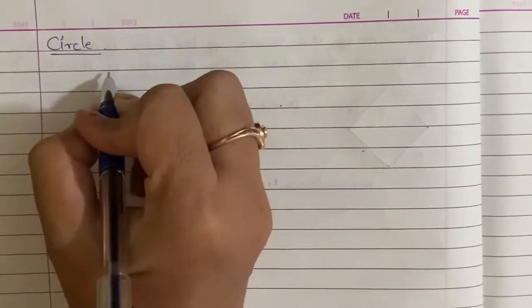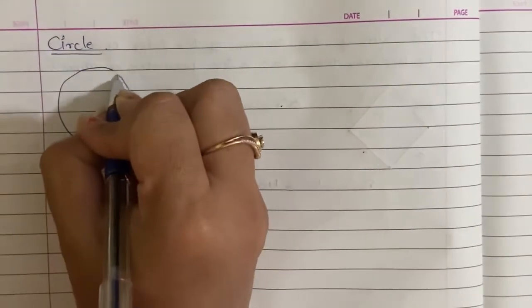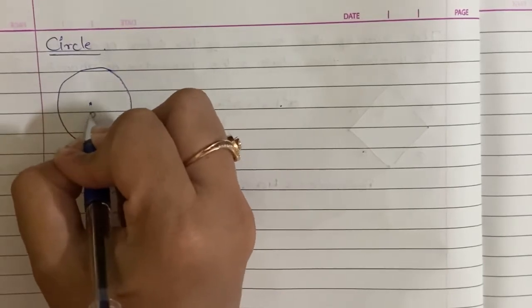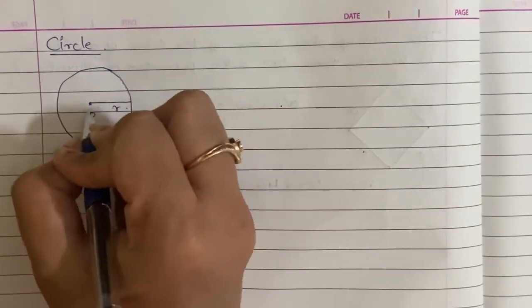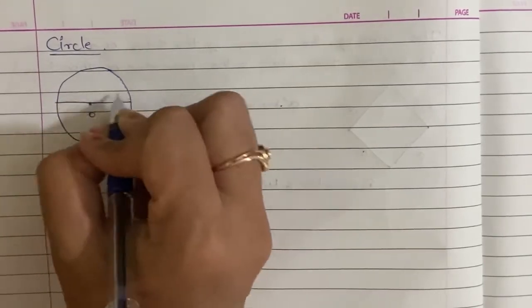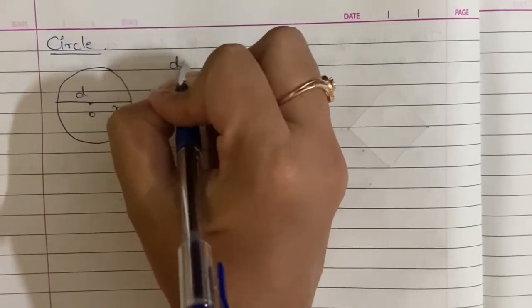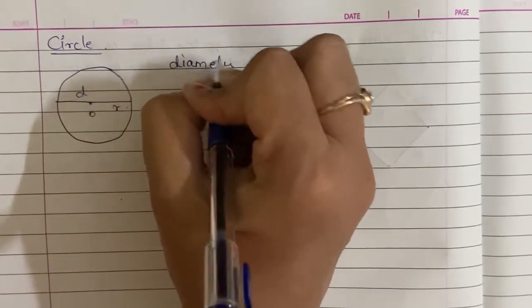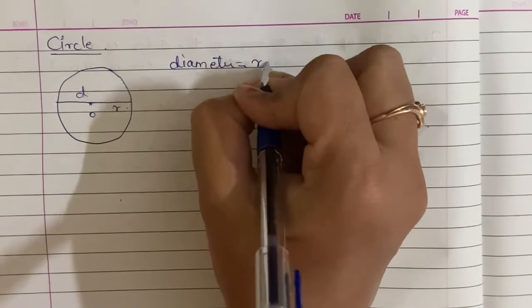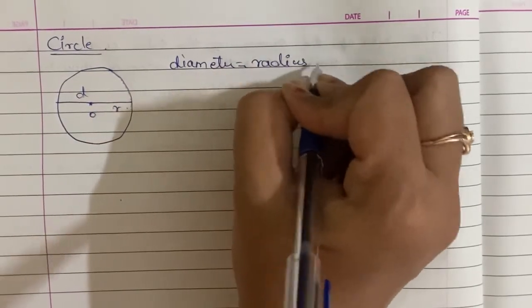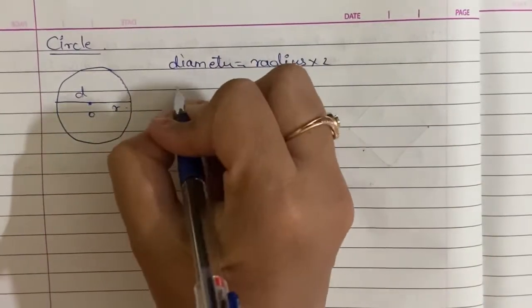We are going to learn about circle. This is circle with the center point O. The radius is equal to r. This is the diameter. Diameter is equal to radius into 2 times.